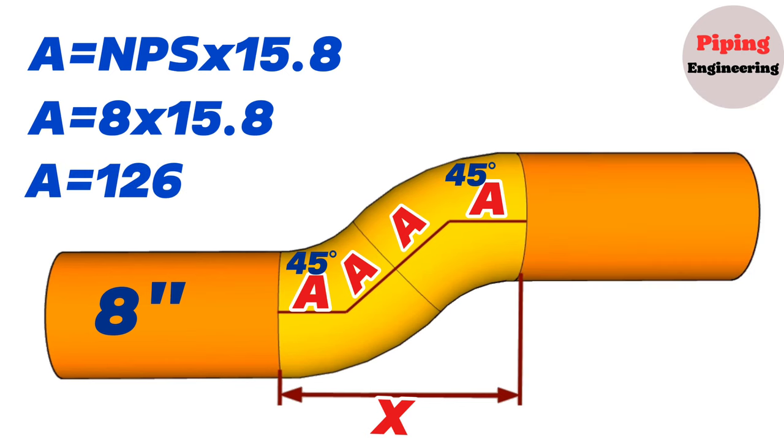The center-to-end distance of the 45-degree long radius elbow is 126 millimeters. So in our example, each one of these distances will be 126 millimeters.